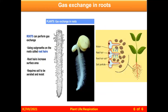Now, gaseous exchange in roots. This is an enlarged, magnified view of a root. Roots can perform gas exchange using outgrowths on the root called root hair. Root hair increases the surface area and requires the soil to be aerated and moist.